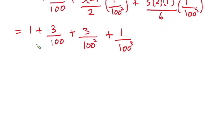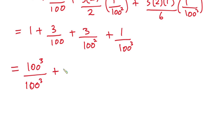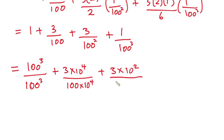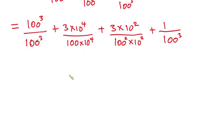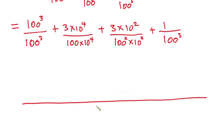Now I'm going to combine these into a single fraction, so they need the same denominator. I'll write 1 as 100³/100³, multiply the 3/100 term by 10⁴/10⁴, multiply the 3/100² term by 10²/10², and leave 1/100³ as is. All denominators become 100³.